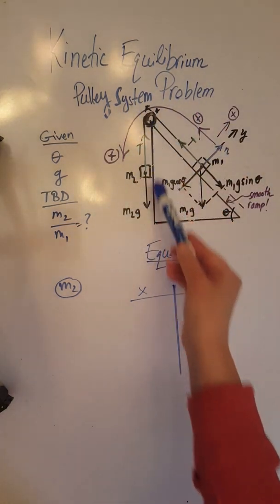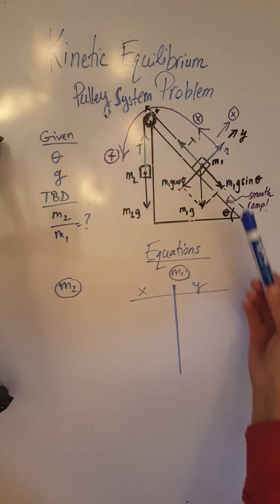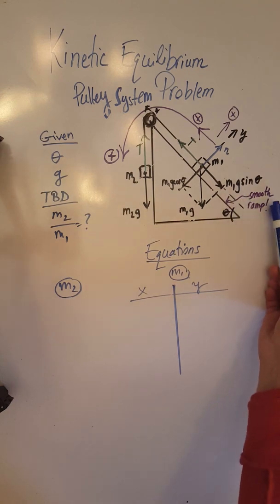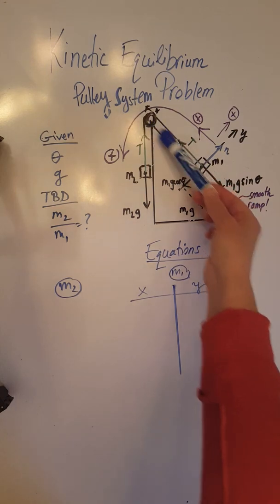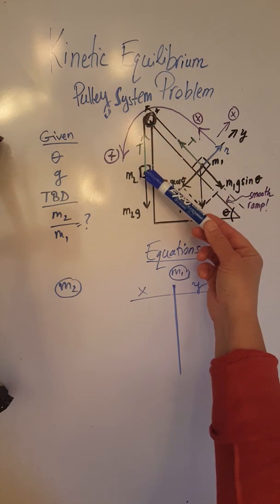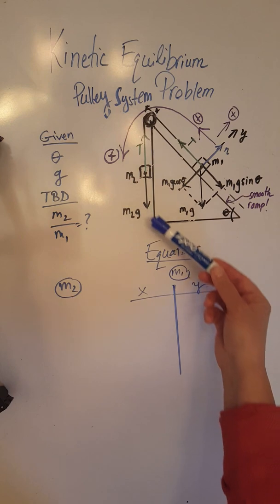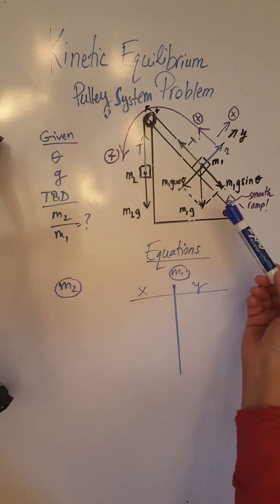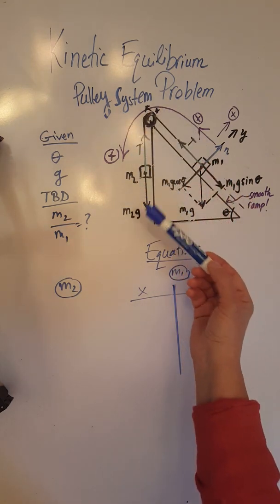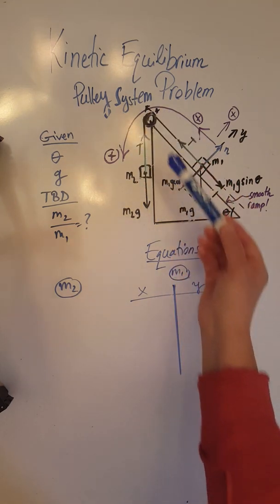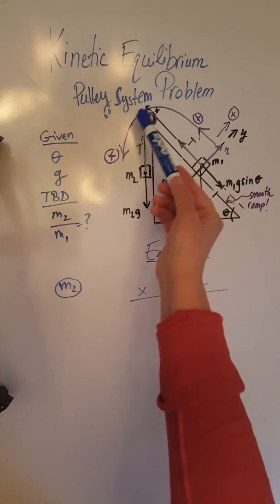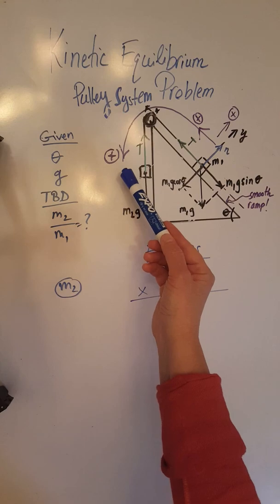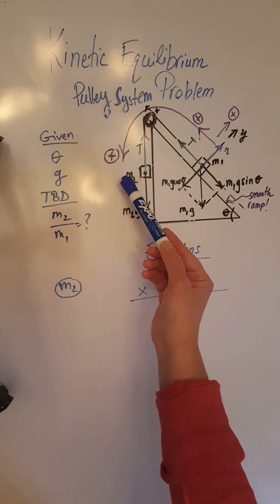We have an inclined plane here of inclination theta. It's a smooth ramp, meaning no friction. We have an object M1 in contact with the ramp and an object M2 hanging on the side of the ramp without touching it. The two objects are connected via a light string and an ideal pulley, and the whole system is moving at constant velocity counterclockwise.